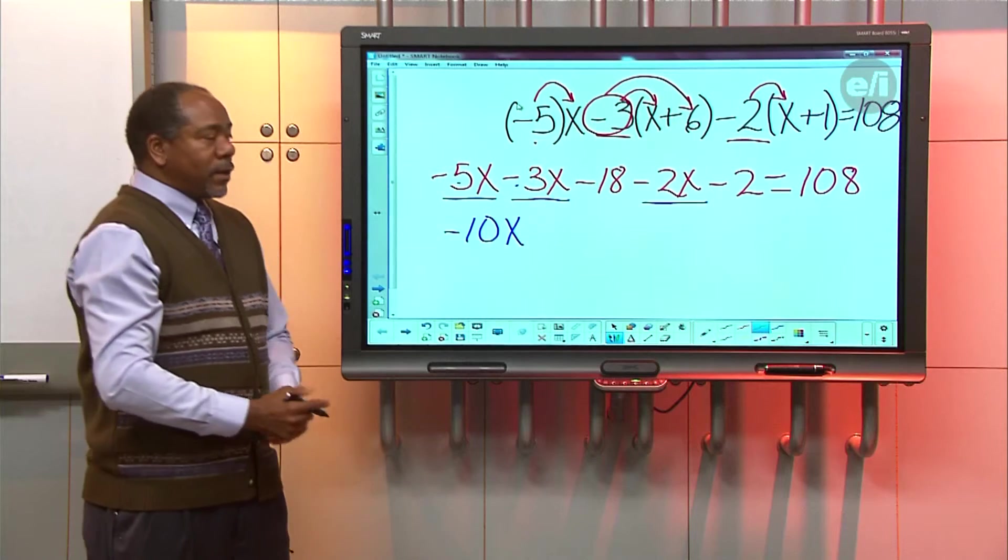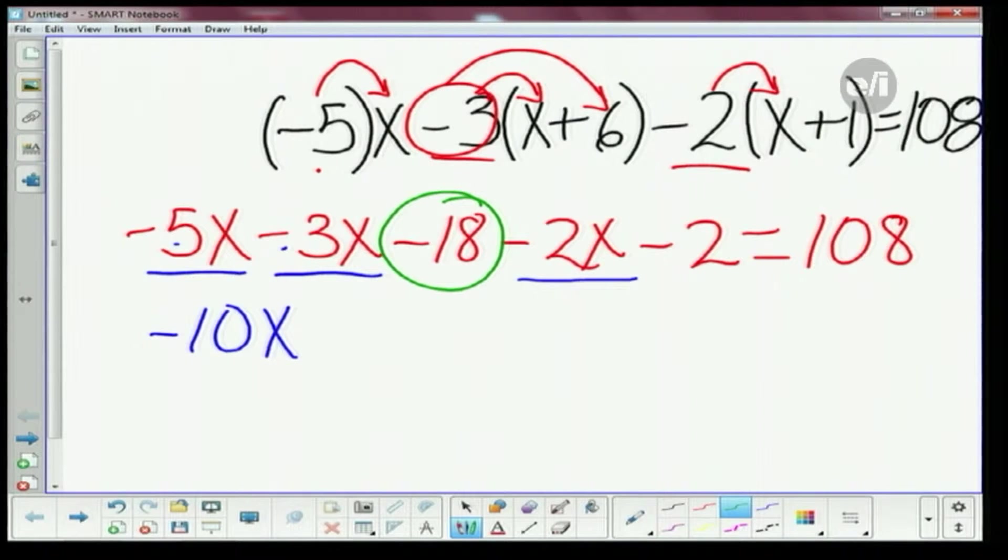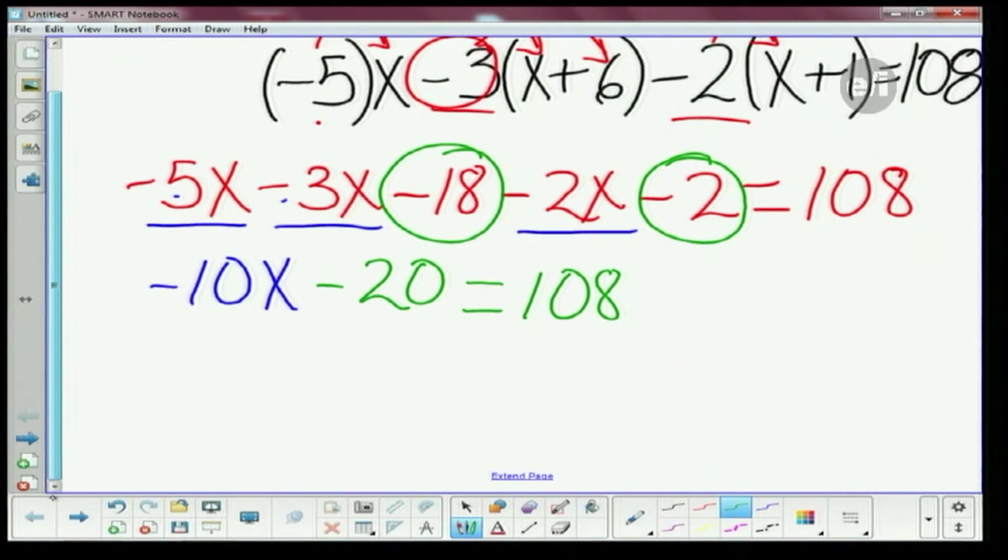So now, what numbers do I have left? A negative 18. Negative 18 and negative 2. And if I combine them, what do I get? 20. Negative 20. And that's equal to 108.